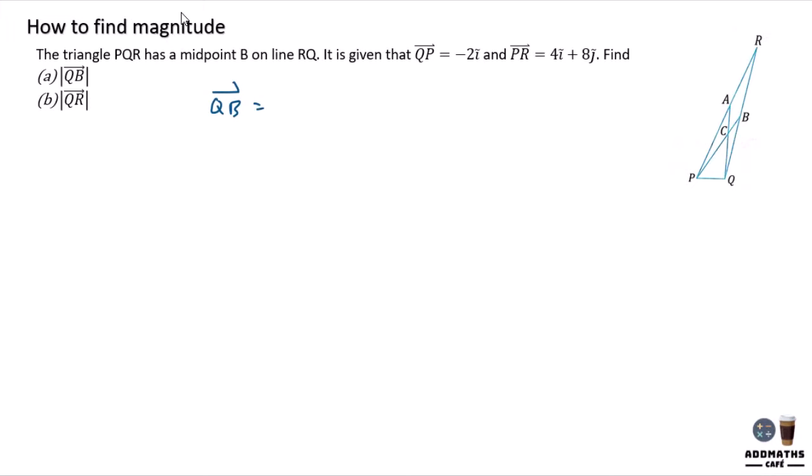Since the triangle PQR has a midpoint B on line RQ, we can say this is the midpoint. This is one part, this is another part. Now QB will be 1 over 2 RQ.